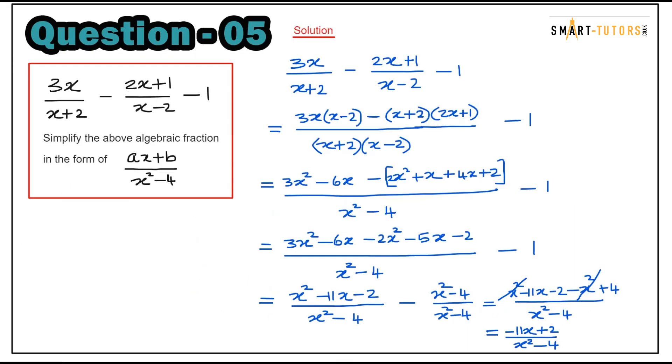Question 5: algebraic fraction. 3x over x plus 2 minus 2x plus 1 over x minus 2 minus 1. Simplify into the form ax plus b over x squared minus 4. Cross multiply: 3x multiplied by x minus 2, and x plus 2 multiplied by 2x plus 1. The bottom is x plus 2 times x minus 2 which is x squared minus 4.